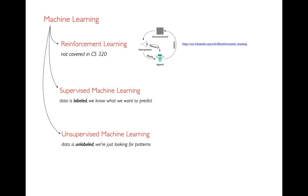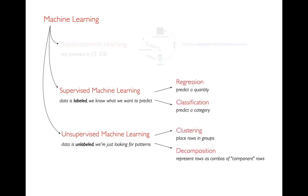The three main areas of machine learning are: reinforcement learning, where you make a series of decisions to optimize some reward (like a robot picking up coins); supervised machine learning; and unsupervised machine learning. We won't be doing reinforcement learning in this class. We'll focus on supervised and unsupervised, where we have all our data up front. Some people add a fourth category called semi-supervised, but we won't cover that here.